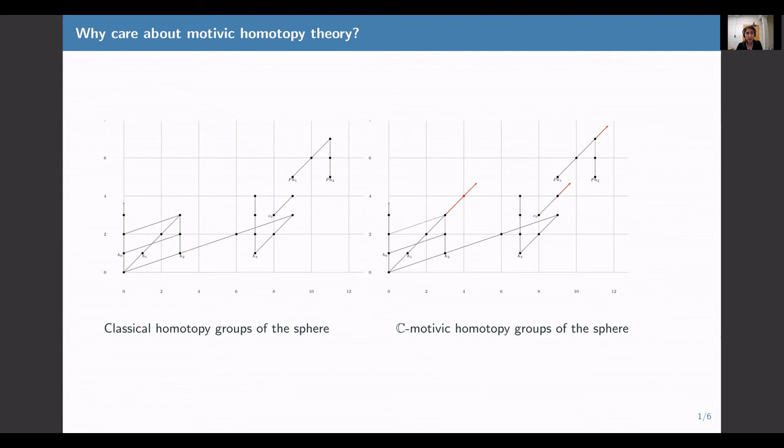On the slide, I have a picture of a little piece of the homotopy groups of spheres in the classical context and in the C-motivic context. Without going into too many details, what you're supposed to notice is that they're obviously very similar, but there are also some new features on the motivic side.